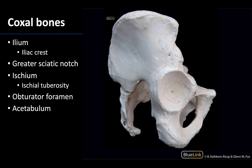Now looking at a lateral view, we can only see the right coxal bone clearly here. You can see the sacrum in this region. Getting our bearings in terms of the different parts: here is the ilium, here is the pubic bone, and here is a better view of the ischium. The ischium and the pubis meet here as well as in the acetabulum, and the ischium is this more posterior inferior bone.